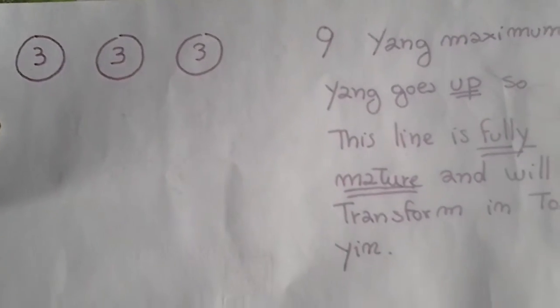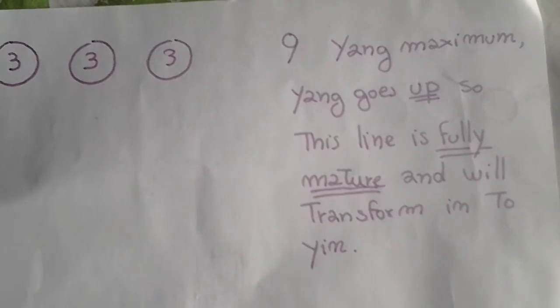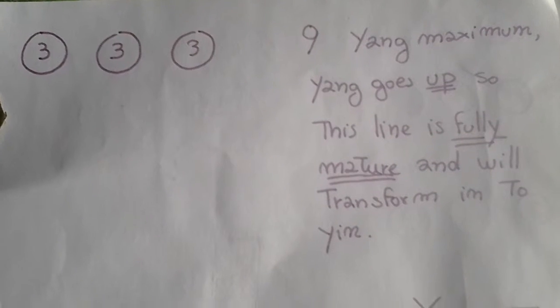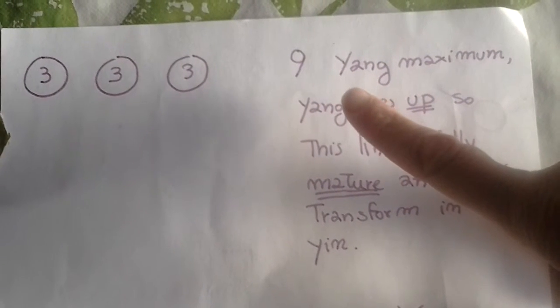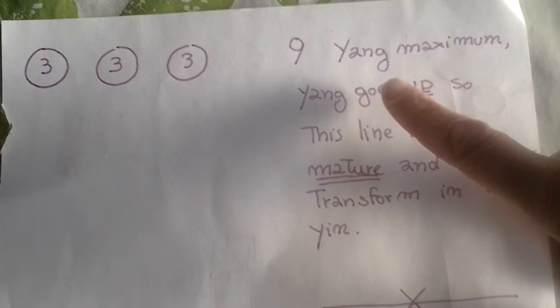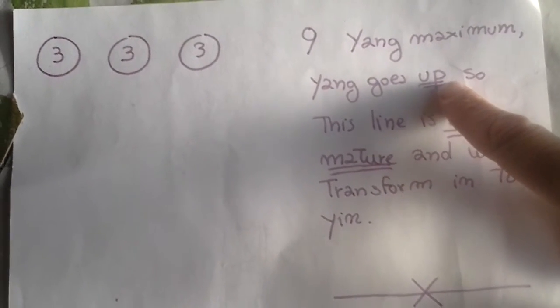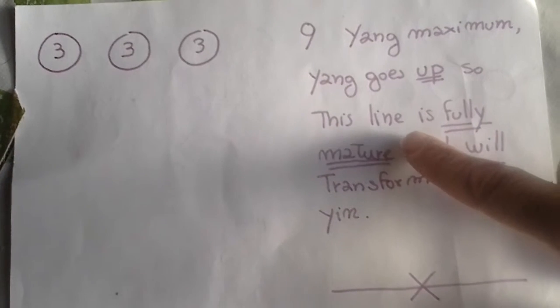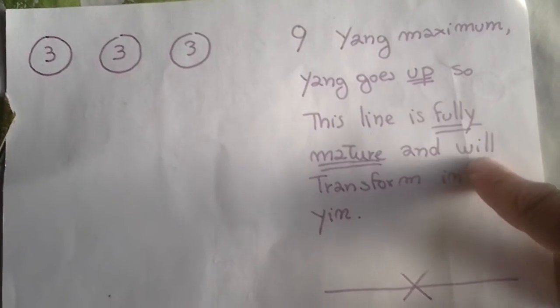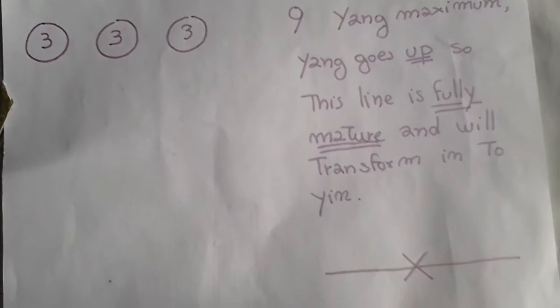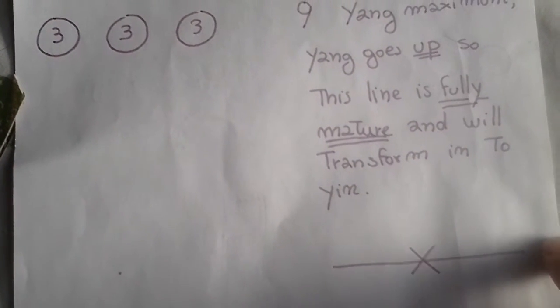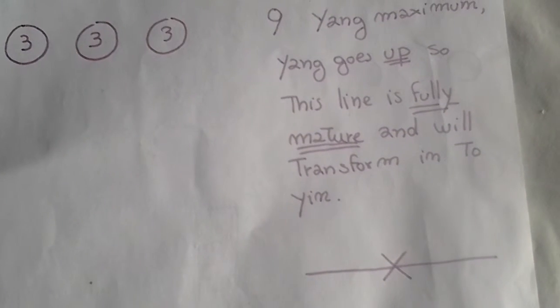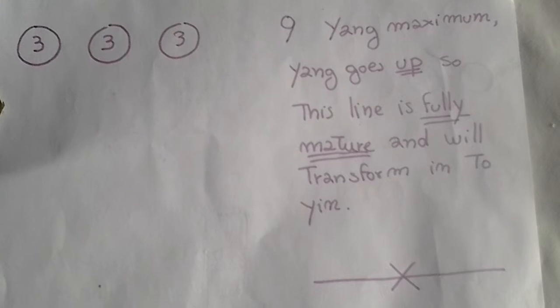Then you can have another possibility, all of them three. Three, three, three, whatever you chose for three, tail or head, as long as you don't change it on the way or ever. Once you decide, it's decided. Nine, this is the maximum number and the maximum yang you can have. Yang goes up, so this is the maximum yang you can have. And this line is a fully mature yang line, which means it's going to change into a yin line. And you will write it this way, like a straight line with a cross in the middle, or if you want you can make the cross on the side. And this will change into a yin line.